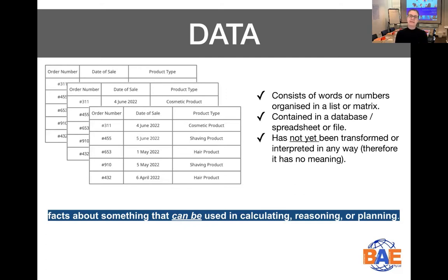Essentially, the main point of data is that data by itself does not have any meaning. So we can't really do anything with data in those very raw forms. However, there's a lot of potential for us to use data to create information. So let's jump to the next term to understand what information is.